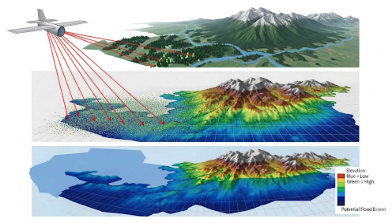Digital elevation models (DEMs), digital surface models (DSMs), digital height models (DHMs) — also known as canopy height models (CHMs) — and intensity rasters are examples of potential raster derivatives from LiDAR data.